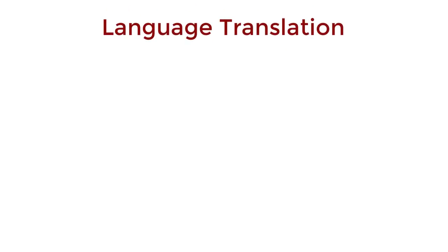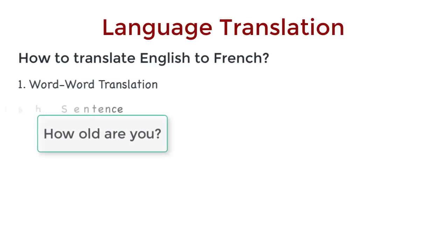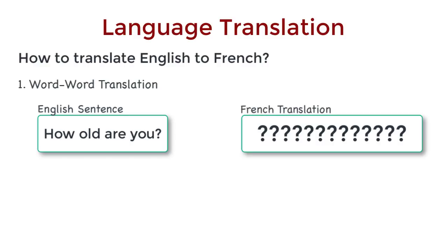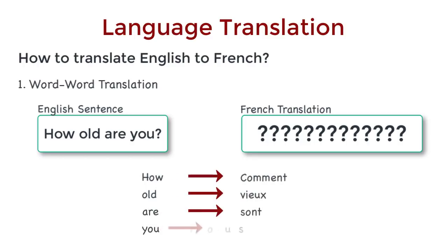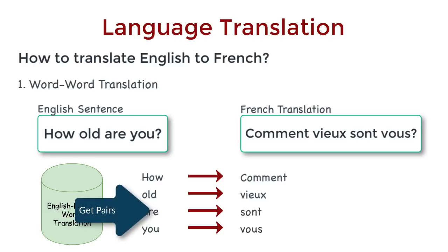Language translation — how do we translate a sentence in one language to another? To make things concrete, let's say we're translating from English to French. Our first trial: take every word in the English sentence, find the corresponding French translation, and spit it out. We don't need machine learning for this — if we just have a curated database with English-to-French word translations, we look up each English word, get the corresponding French word, and repeat.